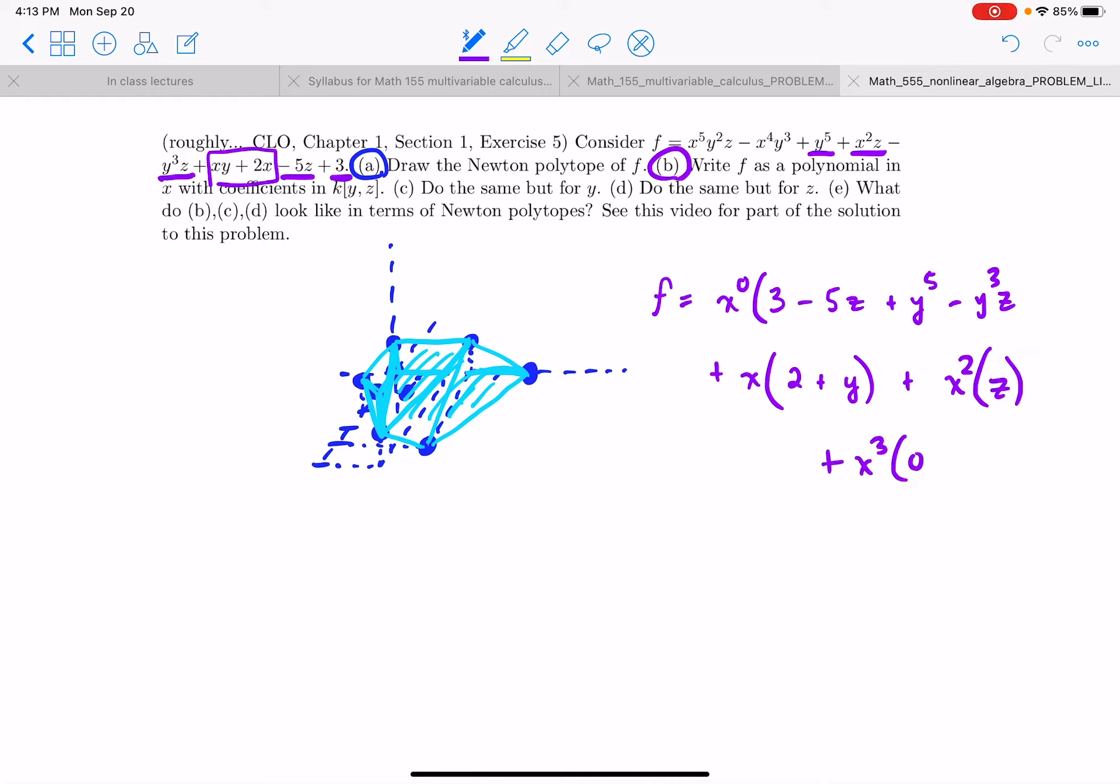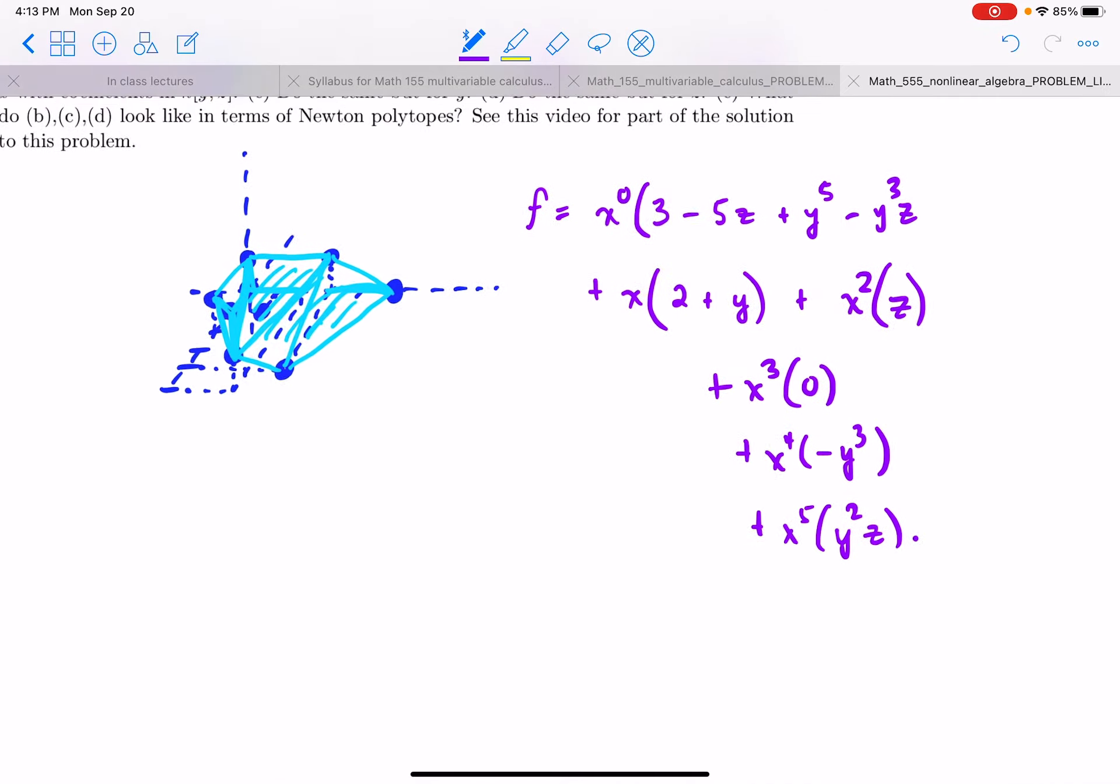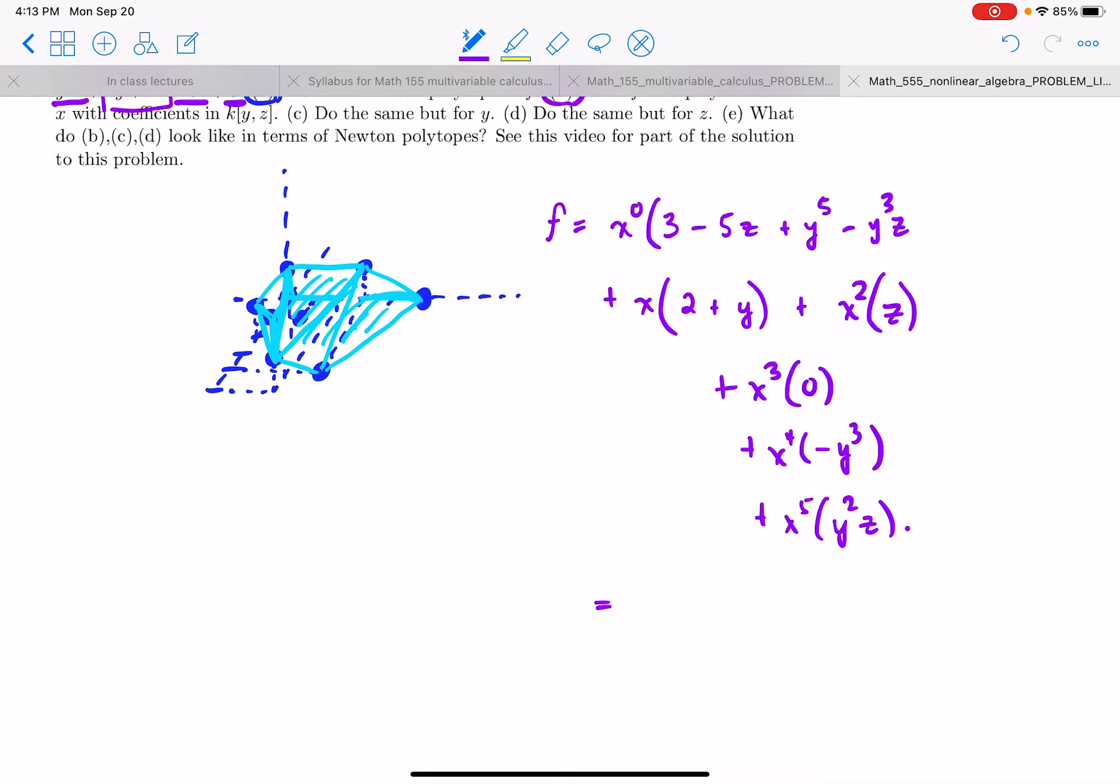And that's it. Plus x to the third times 0. Plus x to the fourth times minus y to the third. Plus x to the fifth times y squared z. And that's it. No other higher powers of x have occurred. So this is writing x as a sum of some polynomials in y and z times x to the i for i equals 0 to the degree which is 5.